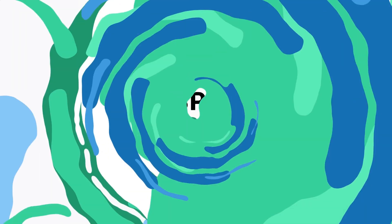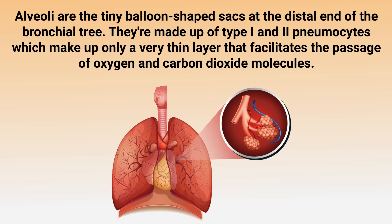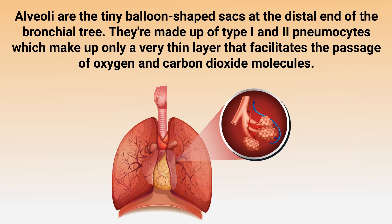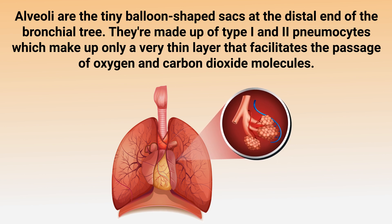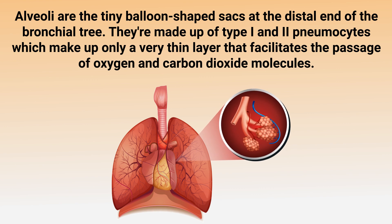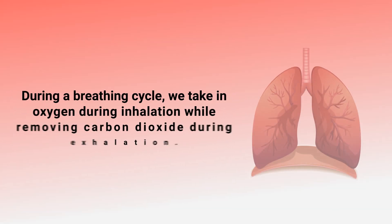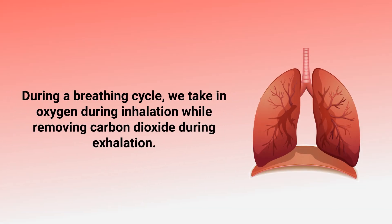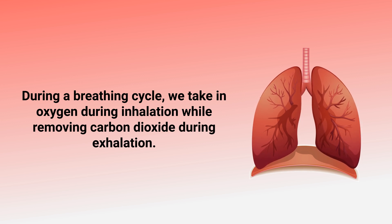Alveoli are the tiny balloon-shaped sacs at the distal end of the bronchial tree. They're made up of type 1 and type 2 pneumocytes, which form only a very thin layer that facilitates the passage of oxygen and carbon dioxide molecules during a breathing cycle. We take in oxygen during inhalation while removing carbon dioxide during exhalation.